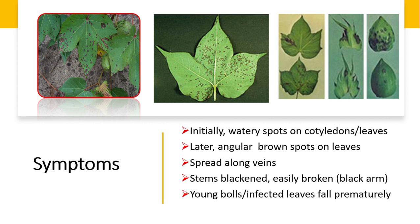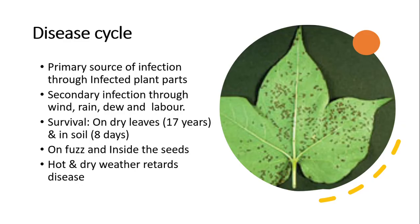Regarding the disease cycle, the primary source of infection is infected plant parts. Secondary infection takes place through wind, rain, and mechanical means. Infected young bolls and leaves fall prematurely.